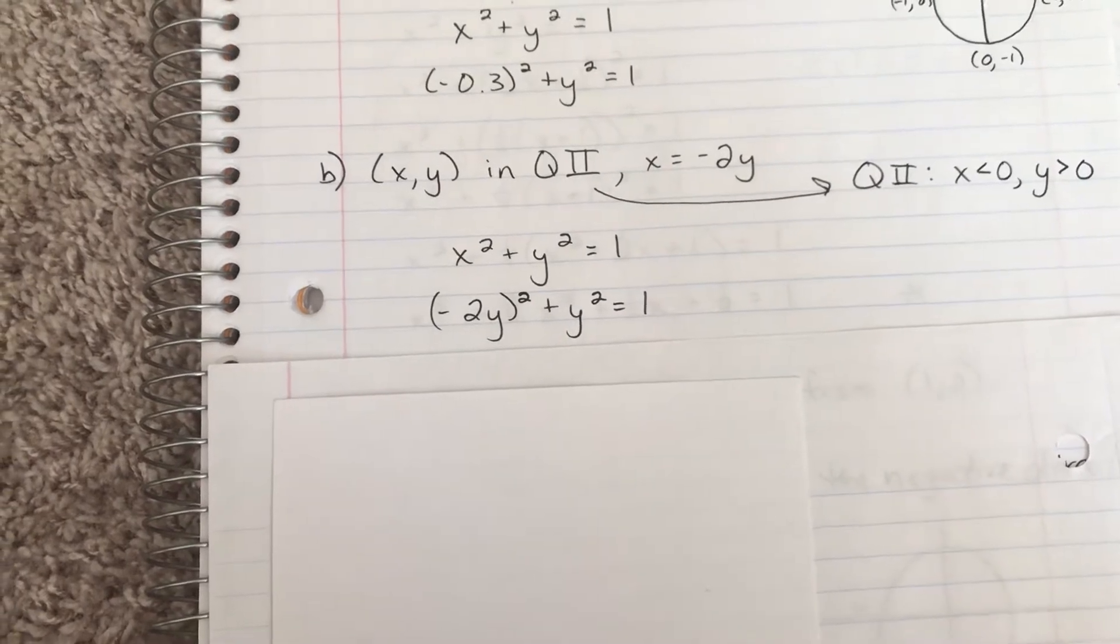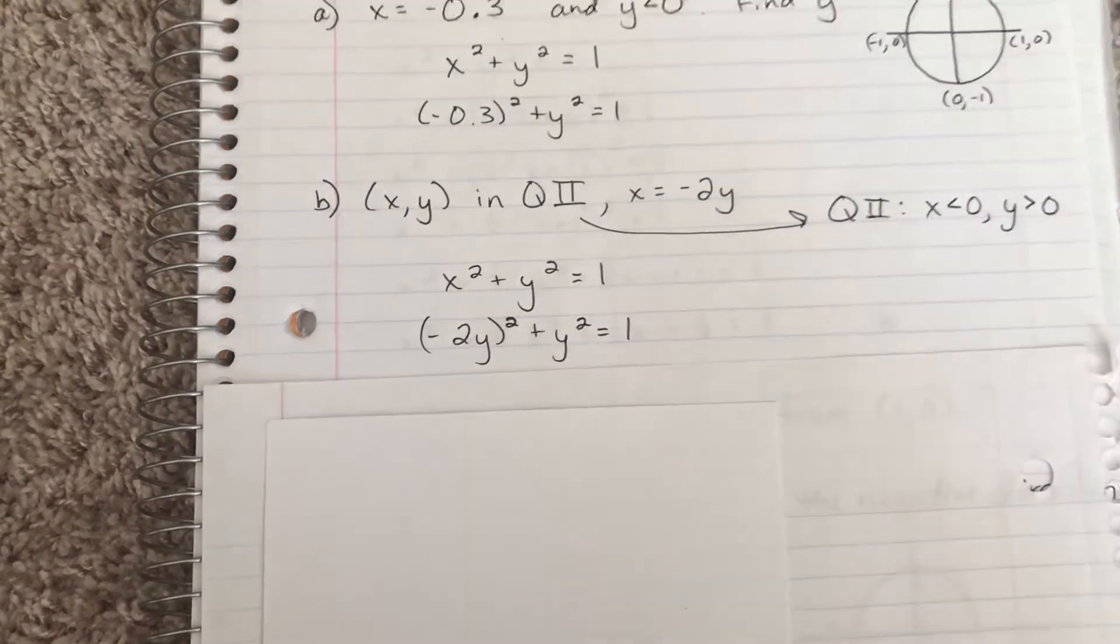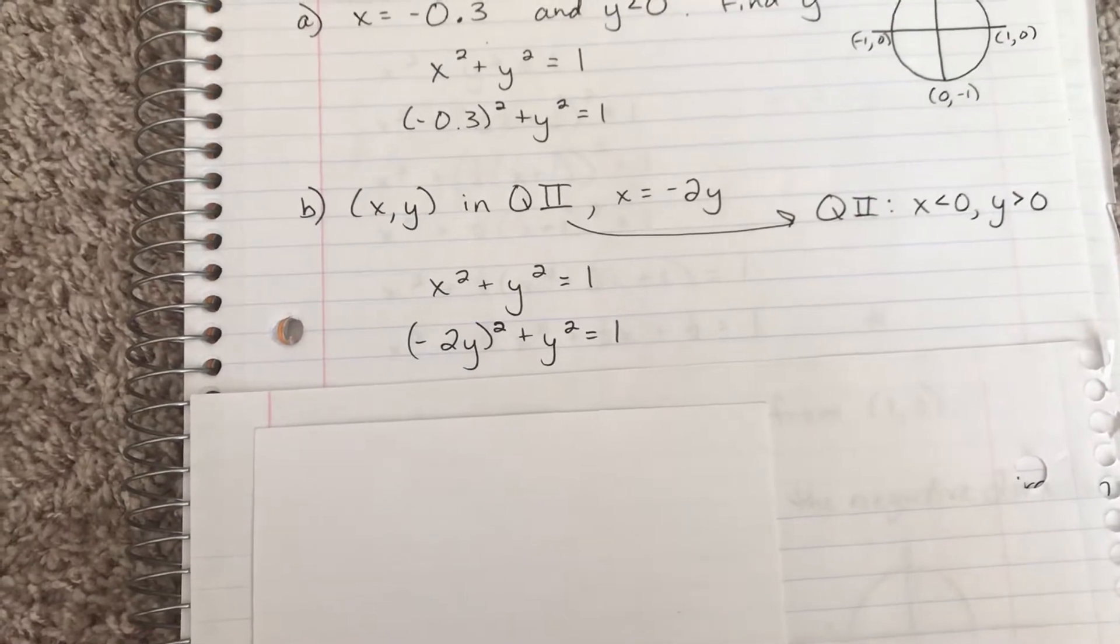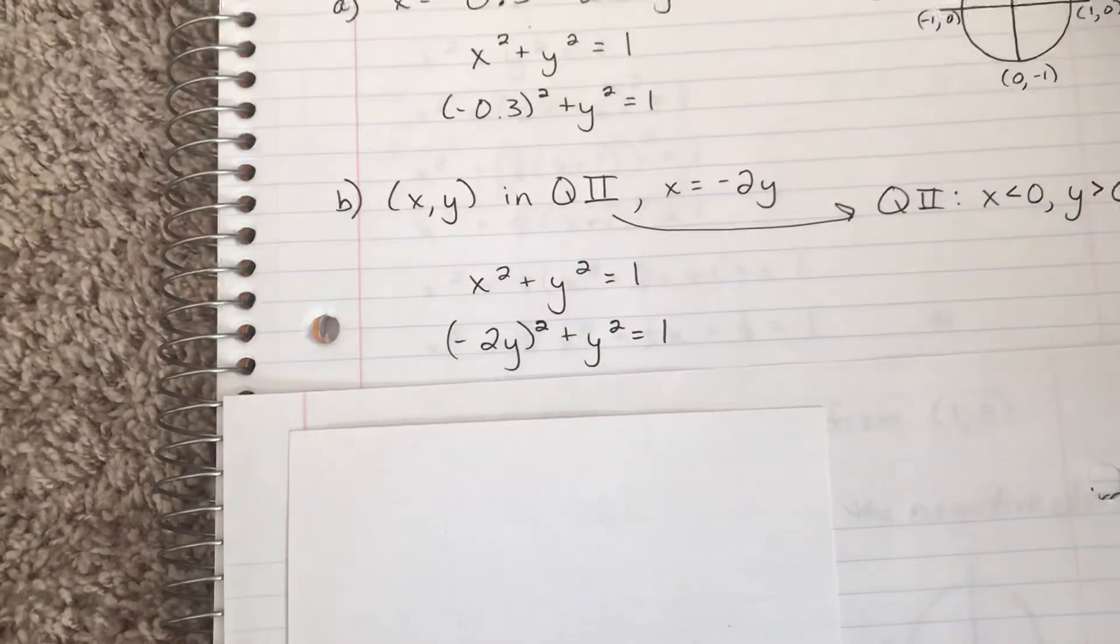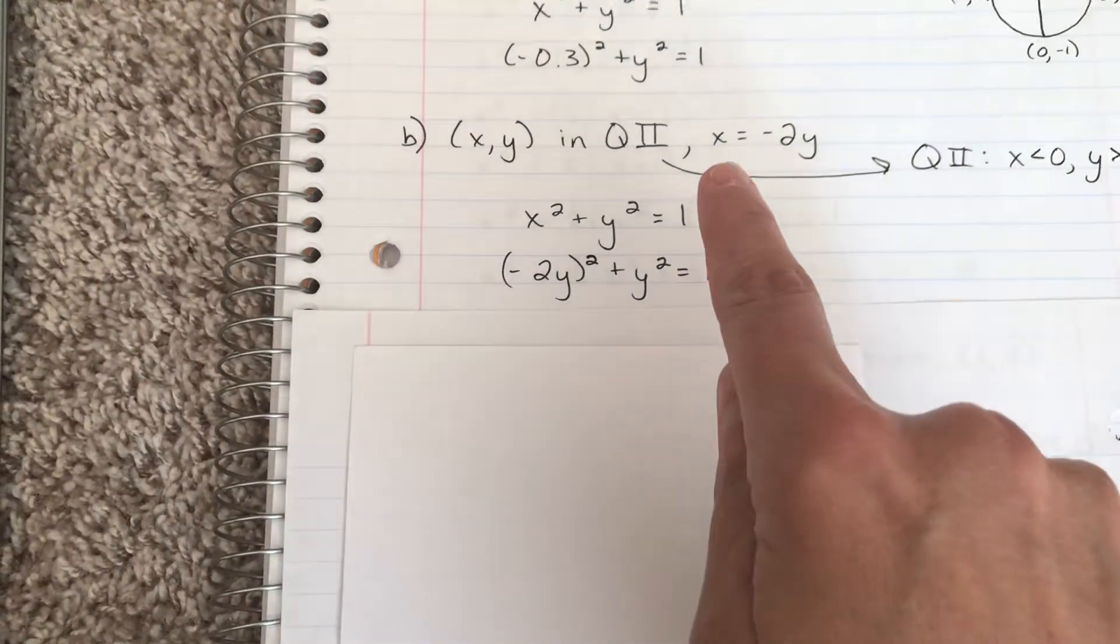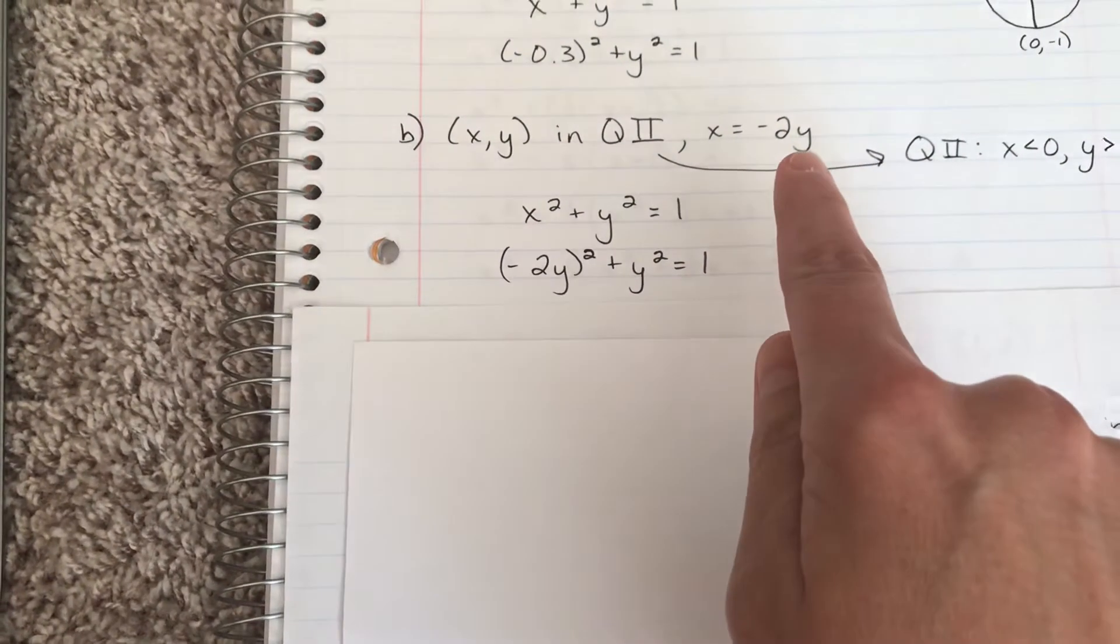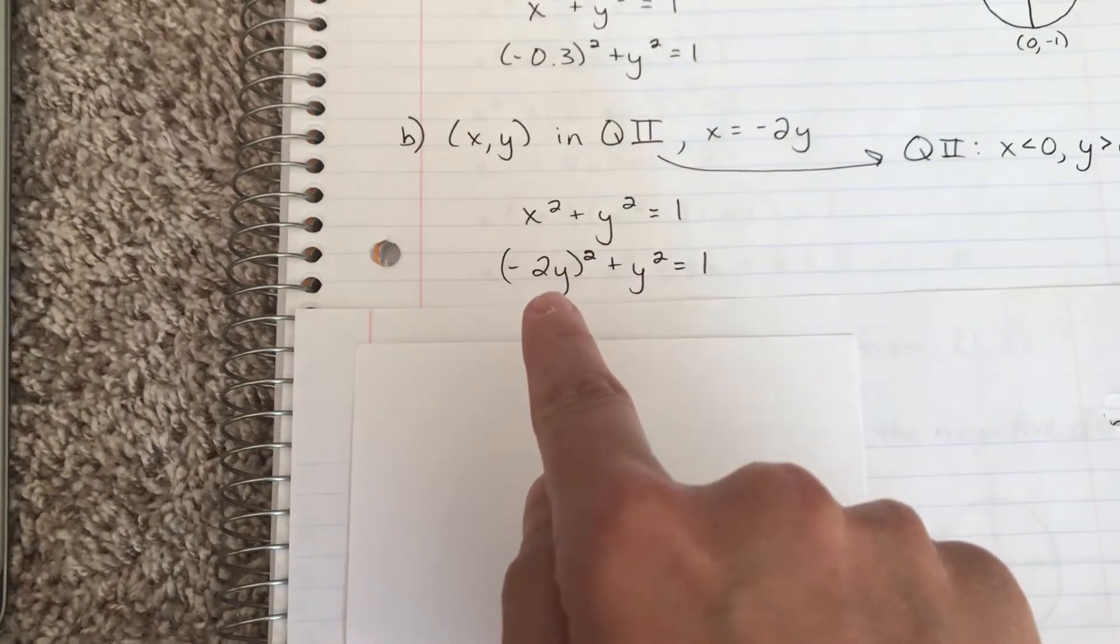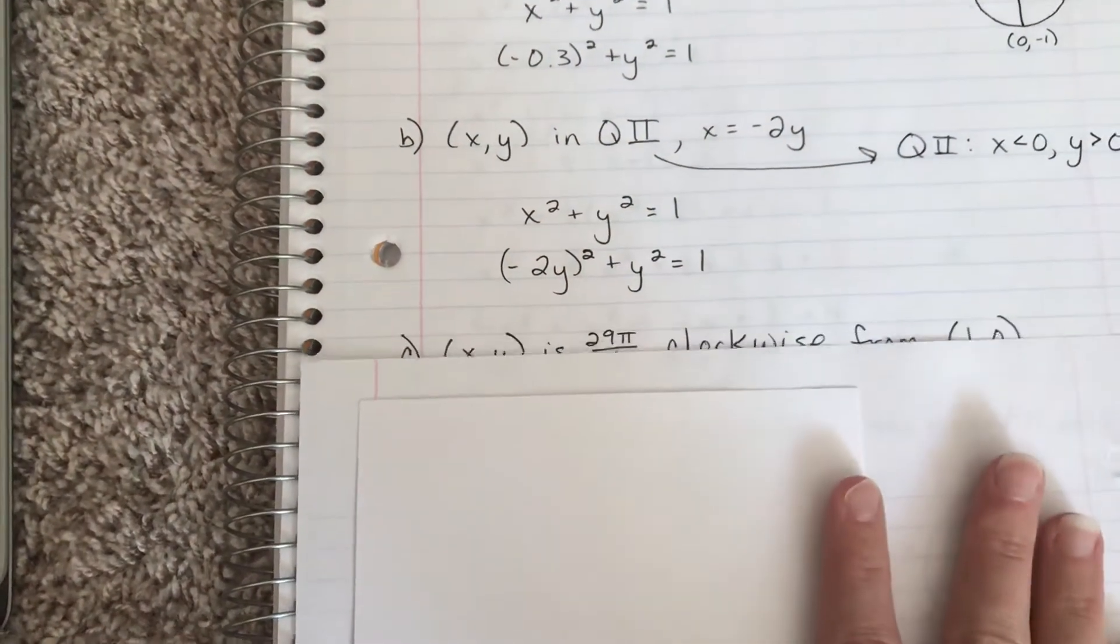Once you square the negative 2y, you'll add it to the y squared, you'll solve for y, and then you can plug that back in to get the x-value. So the process is pretty much the same, maybe a little extra step in there, but the basic idea is since x equals negative 2y, we replace x with that.